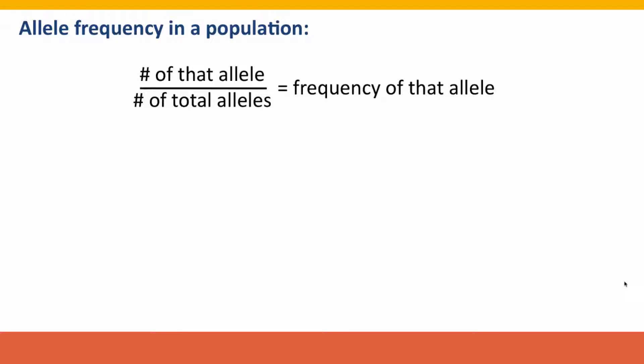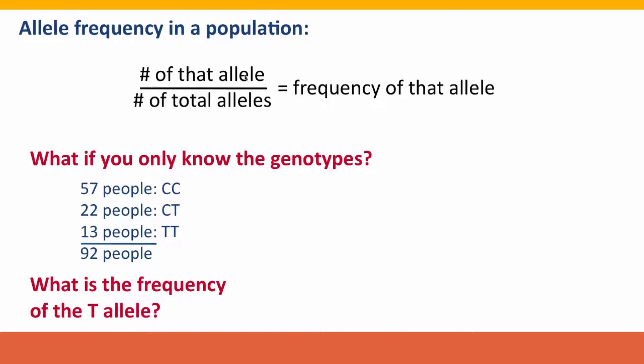Now it's time to think about the frequency of alleles and genotypes in a population, because this will be critical for a lot of the analysis that we do. In particular, it will be important for the last lecture when we talk about the evolution of human genetic differences. The allele frequency in a population is really simple — it's just the number of occurrences of that allele divided by the total number of alleles in the population. But what if you don't actually know the frequency? You haven't counted the alleles — what if you've only counted the genotypes? You surveyed the population, took a sample of people, and determined their genotypes at a particular position, and these are the numbers that you got.